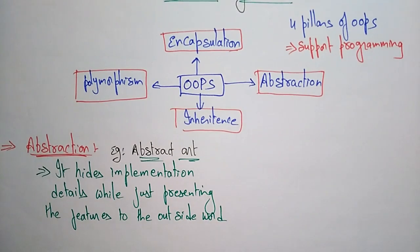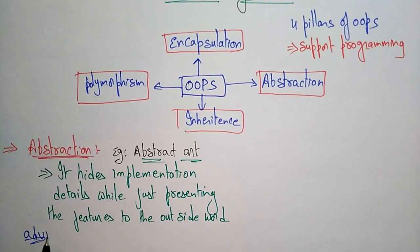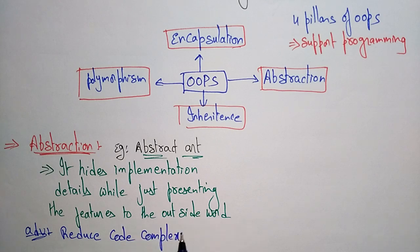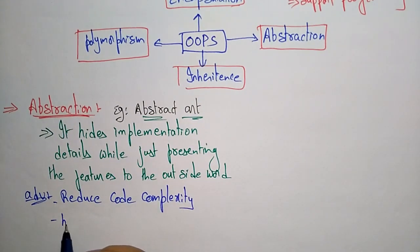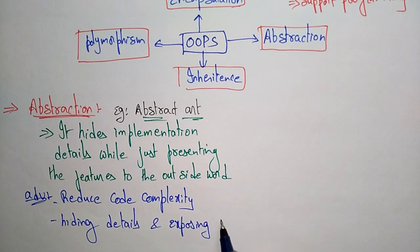Now let us look at the main advantages of using abstraction. The advantages are: it reduces code complexity, it hides the details, and it exposes only the essential parts.